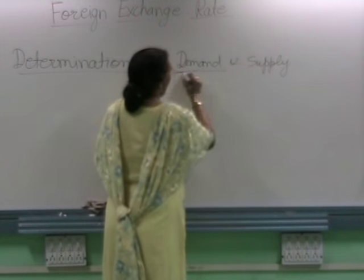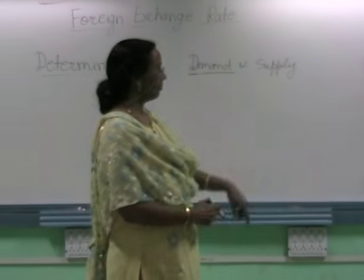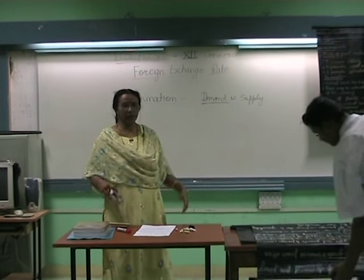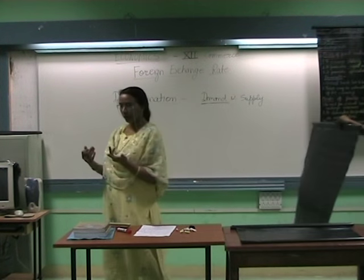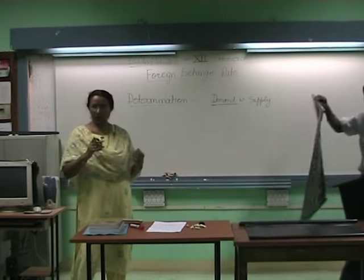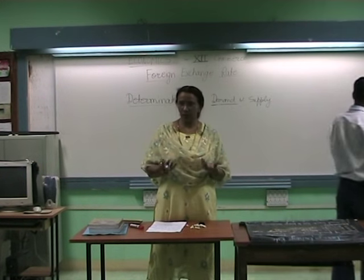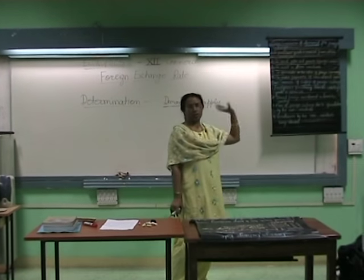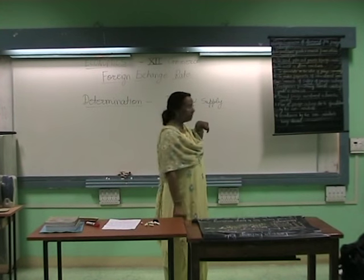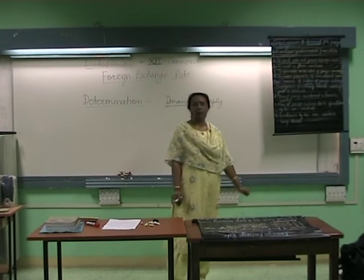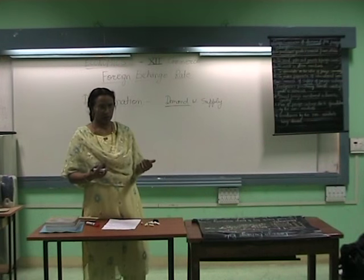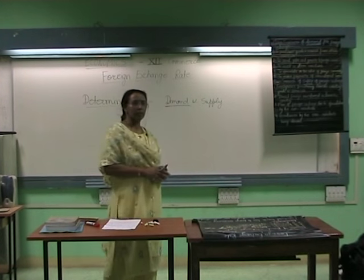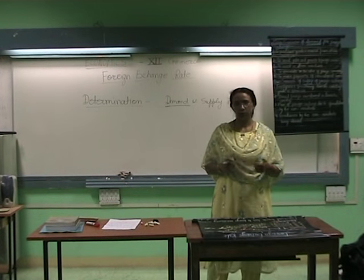The first factor is demand for foreign currency. There are main sources of demand for foreign exchange. The first one: to purchase goods and services from other countries. When we want to import — when we are buying goods and services from another country — we need foreign exchange. So we demand foreign exchange to import commodities from other countries.